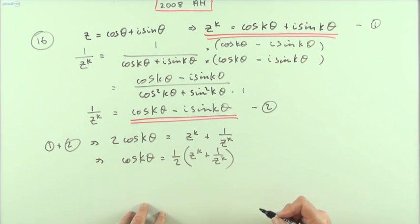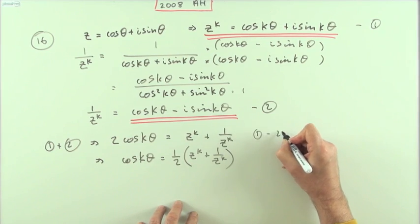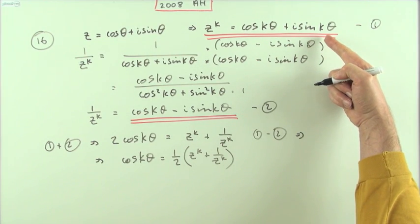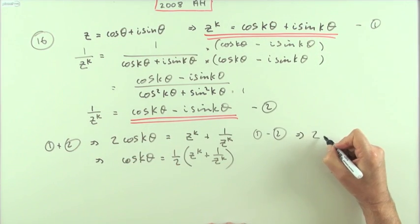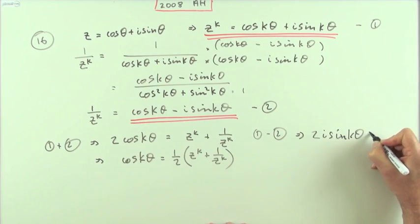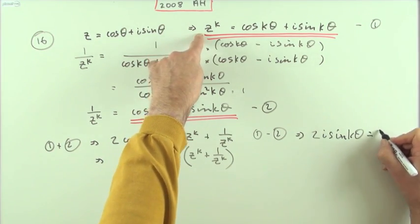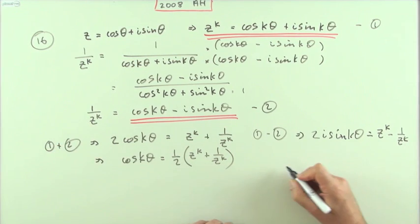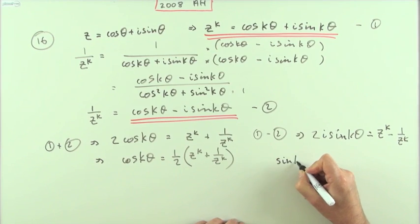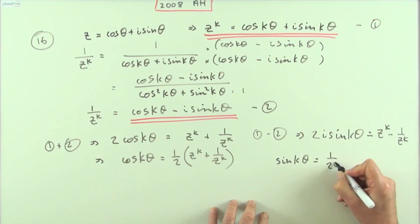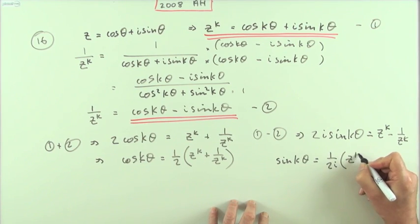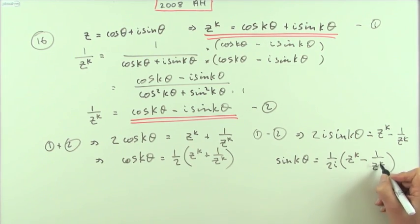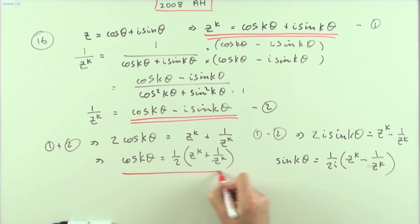Similarly, to isolate sin(kθ), subtracting removes the cosines. Equation one minus equation two gives 2i·sin(kθ) = z to the k minus 1 over z to the k. So sin(kθ) = 1 over 2i times (z^k - 1/z^k). That's the second part done.